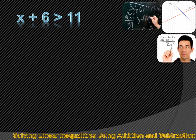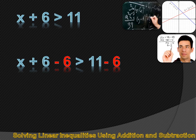Here we have X plus 6 is greater than 11. If you're asked to solve this for X, we can subtract 6 from both sides of the inequality sign — the same thing to both sides. The 6 disappears on the left side, and we can rewrite this expression as X is greater than 5.